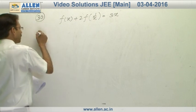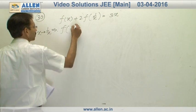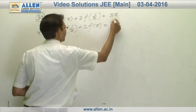If we replace x by 1 upon x, the new equation will be f of 1 upon x plus 2 f of x is equal to 3 by x.